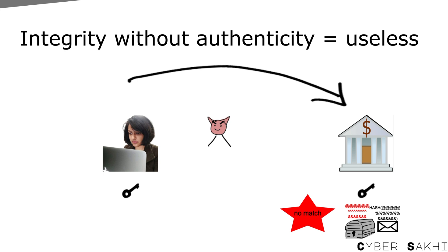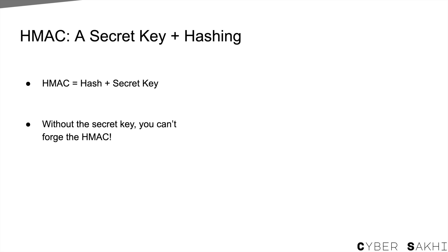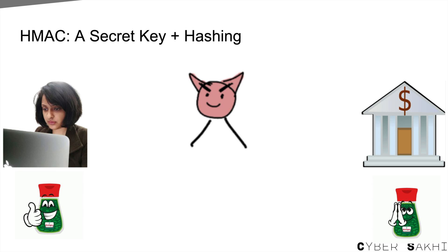Let's learn about HMAC. HMAC stands for hash-based message authentication code. It's basically hashing where we mix a secret key into the hashing process. This secret key is known only to the sender and the receiver. We have already learned how we can securely exchange keys using asymmetric cryptography, so we can assume the sender and receiver were able to exchange this shared secret key securely.